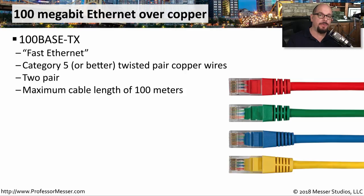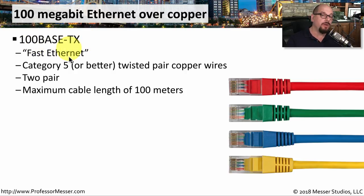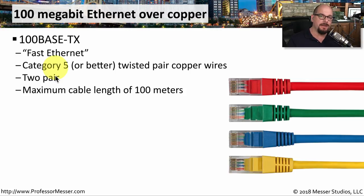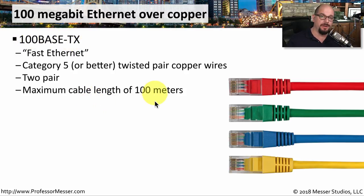If you're running 100 megabit Ethernet over twisted pair cables, then you are using 100BaseTX. You'll sometimes hear this referred to as fast Ethernet, which is what we called 100 megabit when it was released after using 10 megabit Ethernet for so long. 100BaseTX uses category 5 or better twisted pair copper cabling, and it uses two of the pairs inside of that cable — it does not use all four pairs. The maximum length of a cable run for the 100BaseTX standard is 100 meters.